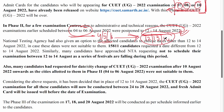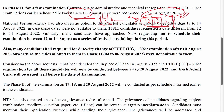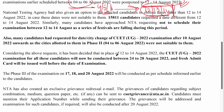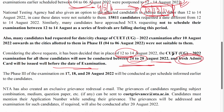If you have any student who cannot give the exam on those dates, NTA will inform them separately. Considering the above, it has been decided that instead of 12th to 14th, it will now be conducted from 24th to 28th, and a fresh admit card will be issued. This means that for the center change, the students who applied will now have their exam conducted on 24th to 28th of August, and a fresh admit card will also be issued.